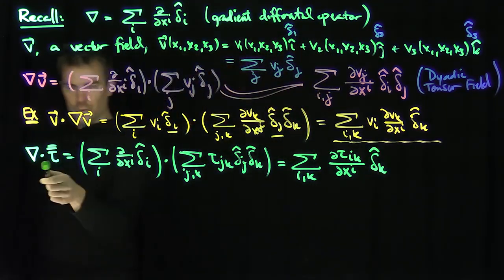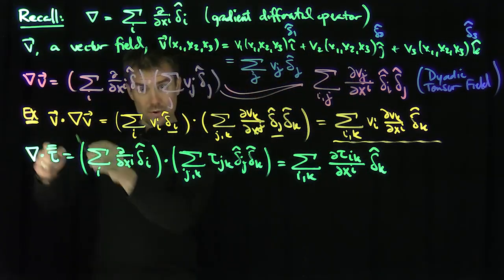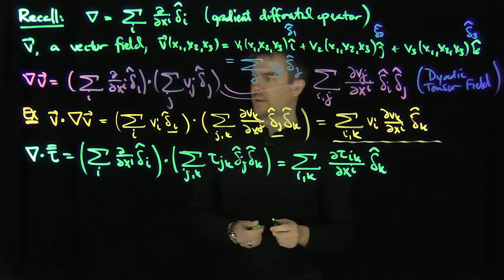So in order to do the dot product, the gradient dot a dyadic tensor, you're going to get a vector itself. We have exactly the same structure, just in the opposite order.